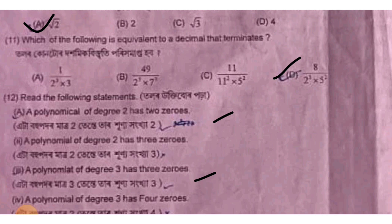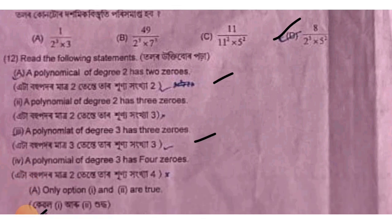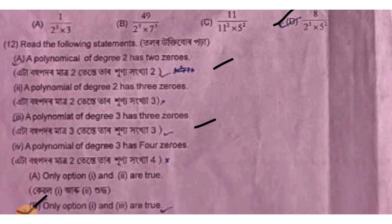Setting up the solution, the matra (value) is established. Going through the options, option A is considered, and finally option B is the correct answer.